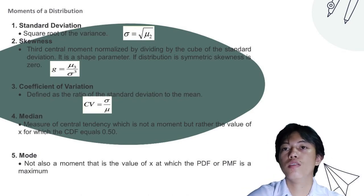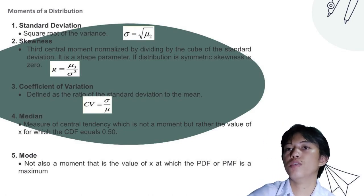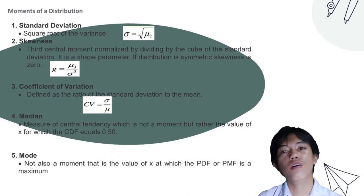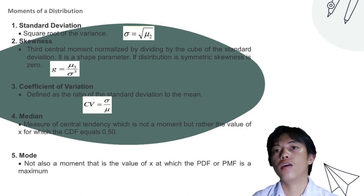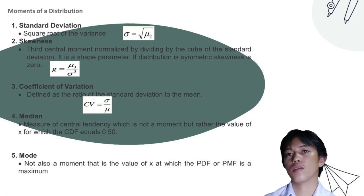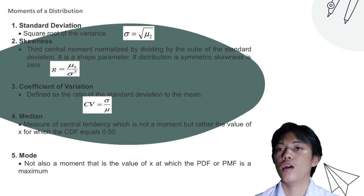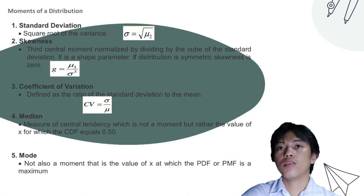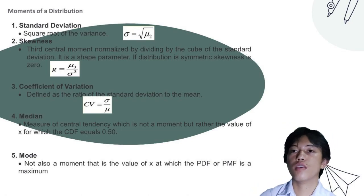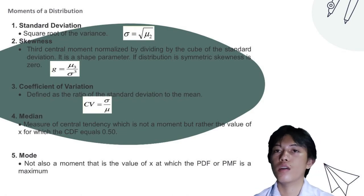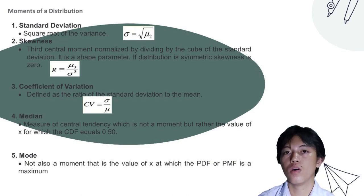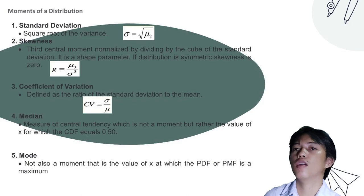Skewness is the third central moment normalized by dividing by the cube of the standard deviation — a shape parameter. If the distribution is symmetric, skewness is 0. The formula is g equals mu-sub-3 over sigma-cubed. The coefficient of variation is defined as C-sub-v equals sigma over mu. The median is the value of x for which the CDF equals 0.50. The mode is the value of x at which the PDF or PMF is a maximum.